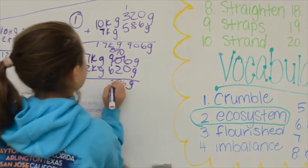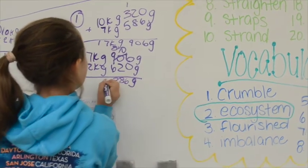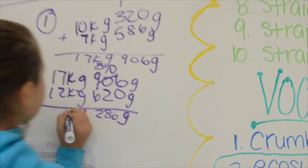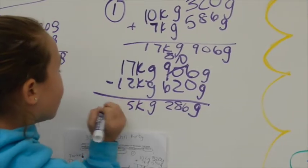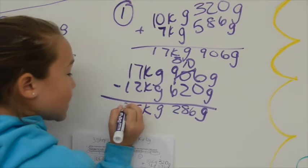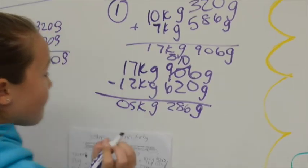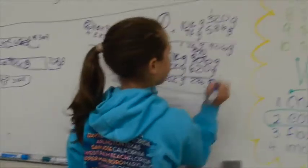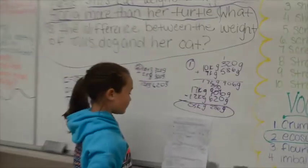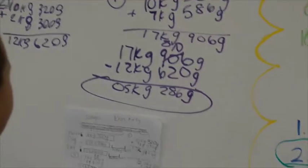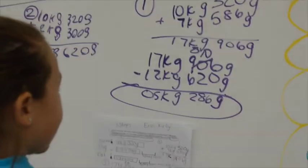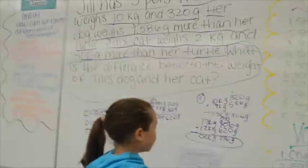8 minus 6 is 2, 3, and 7 minus 2 is 5. All right, so both of you — what is the difference between the weight of the dog and the cat? 5 kilograms, 286 grams. Exactly. Good job, guys.